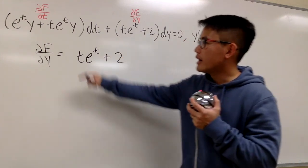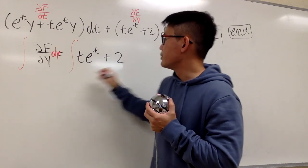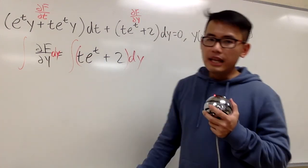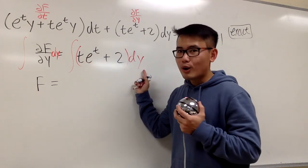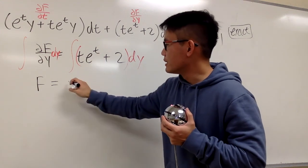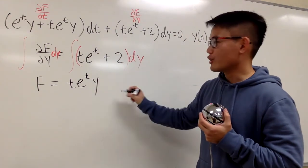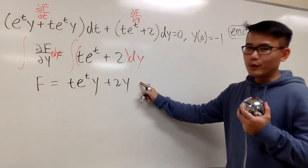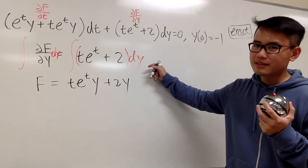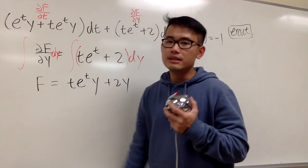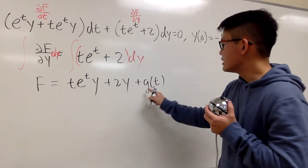Our goal is to figure out what capital F is. Let's integrate both sides with respect to Y. On the left-hand side we get F. On the right, T e to the T is just a constant in the Y world, so the integral is T e to the T times Y, and integrating 2 gives 2Y. After integrating we add a constant — but in the Y world, we put down g of T, since T is technically a constant. The function F is multivariable, involving both T and Y, so we write plus g of T.